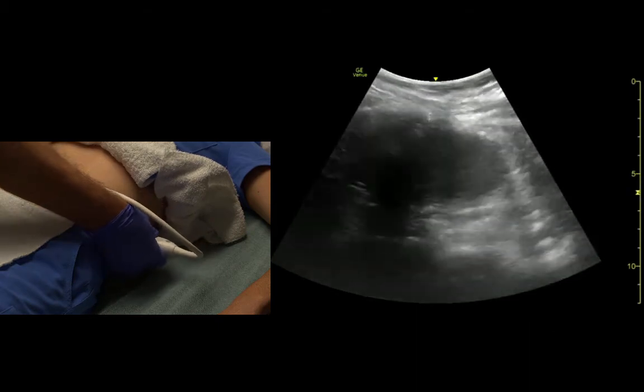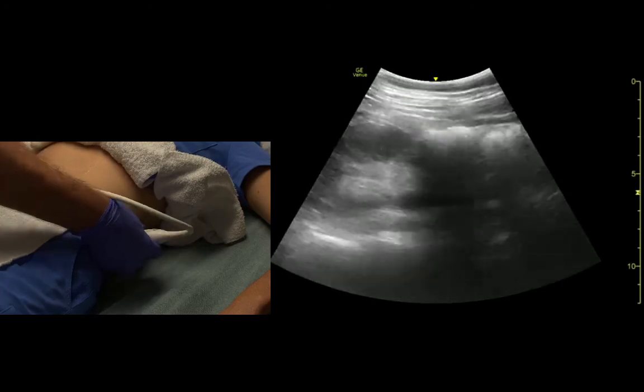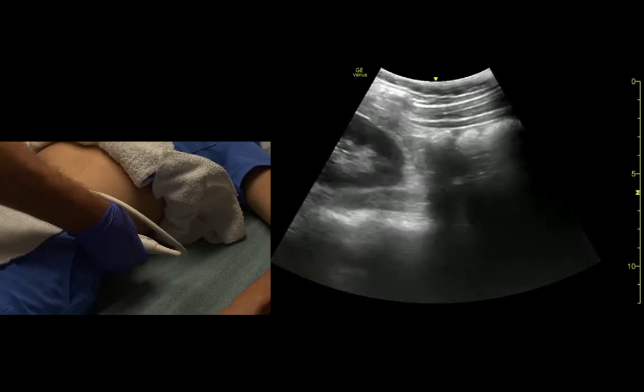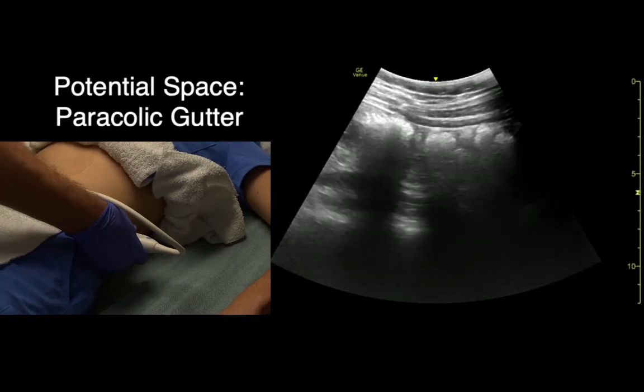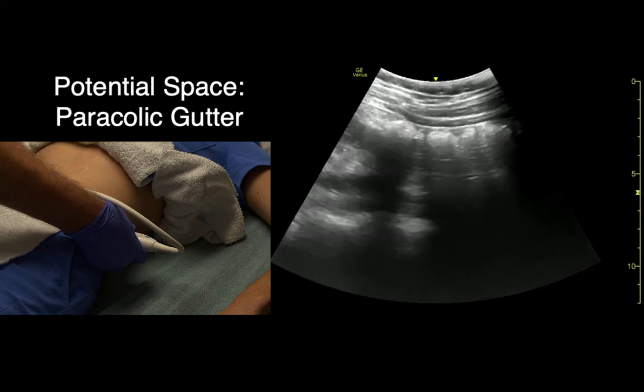If we fan below the kidney, we see these bowel gas bubbles. That's the pericolic gutter.